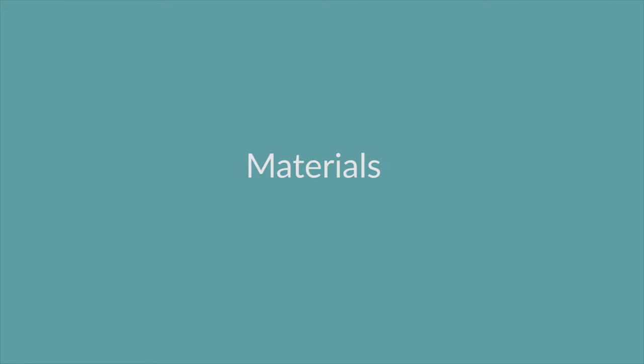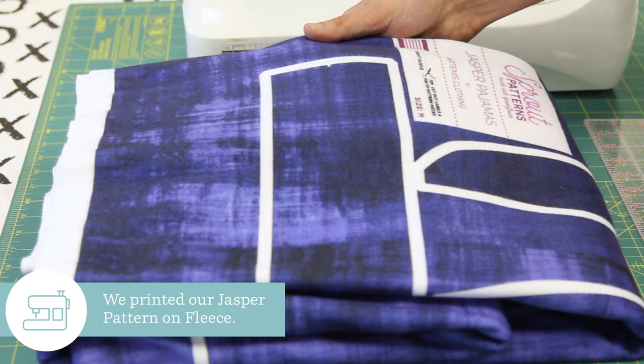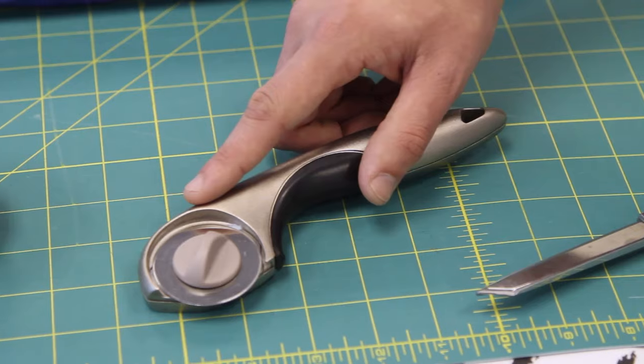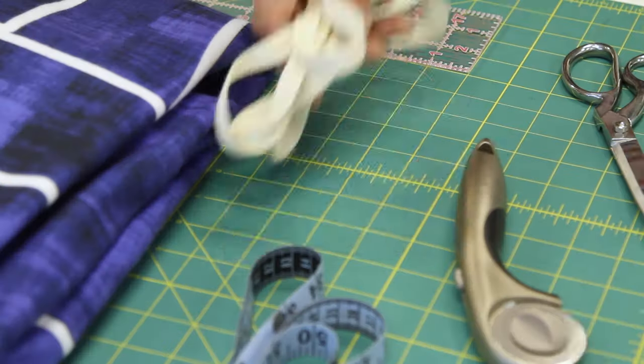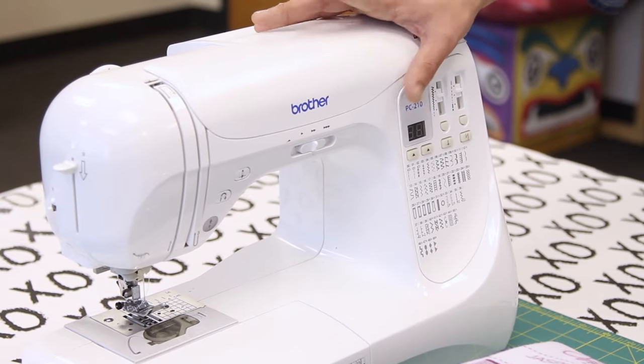For this project, you'll need your Jasper Pattern fabric from Sprout, scissors or a rotary blade, measuring tape, pins, twill tape, and a sewing machine.